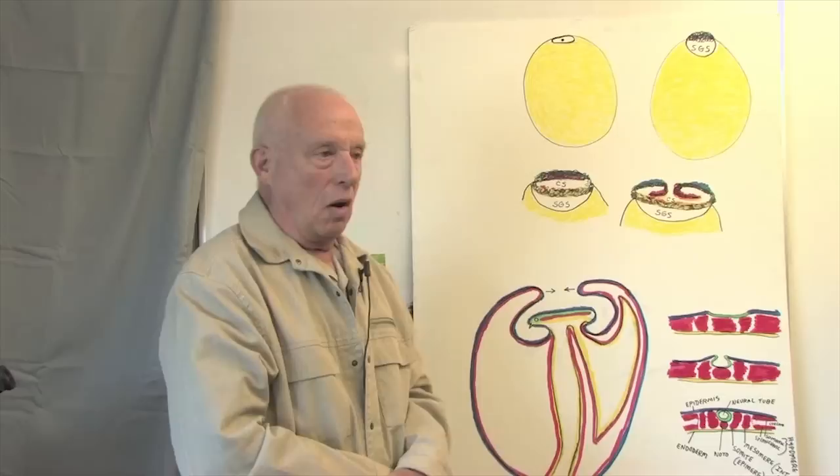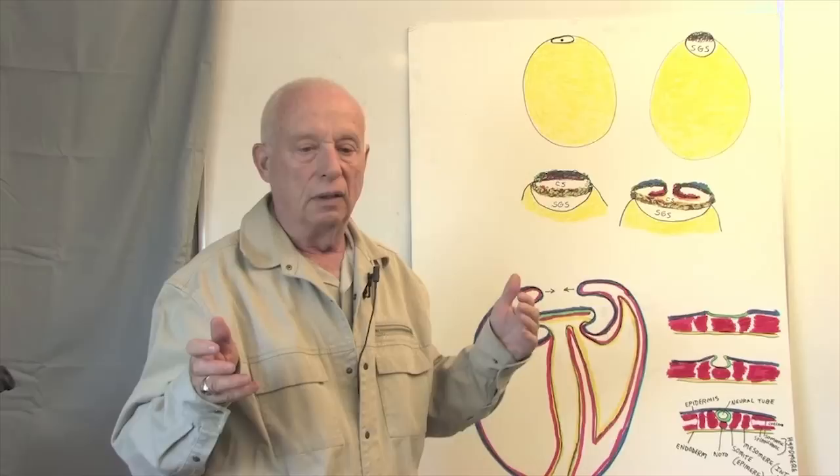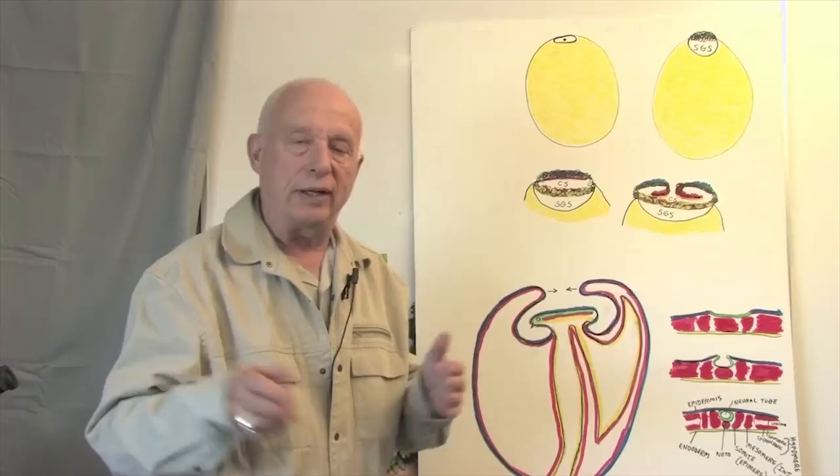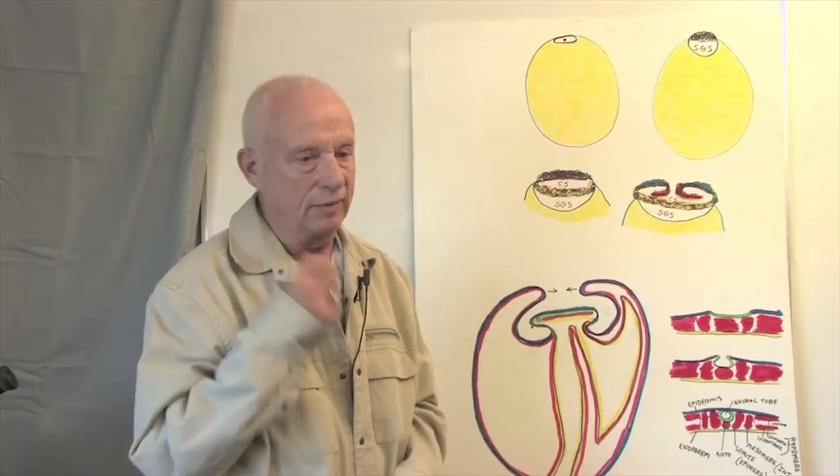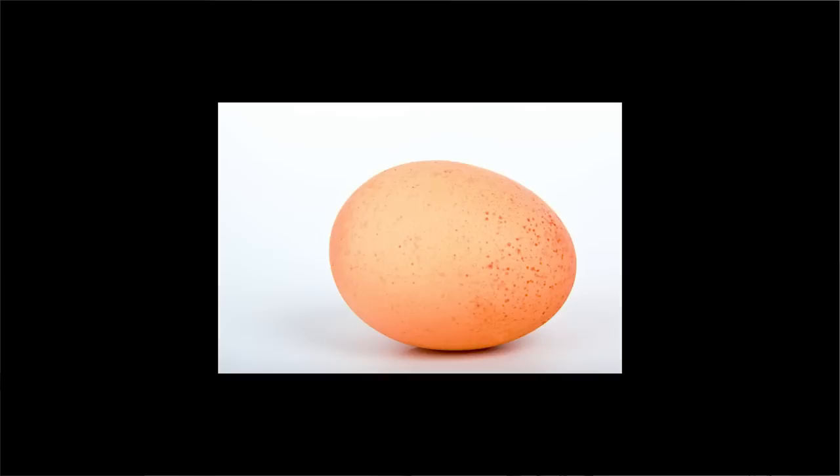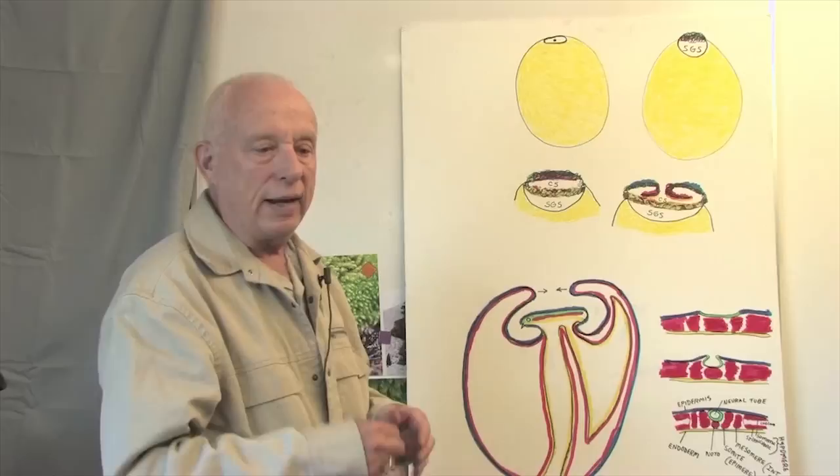Now we turn to a totally different embryo than the frog — the chick. We start with the chick egg, which is very different from the frog egg, very different from the sea urchin and amphioxus. The chick is a big egg. And you know, when you have your eggs in the morning, you have a chick egg.